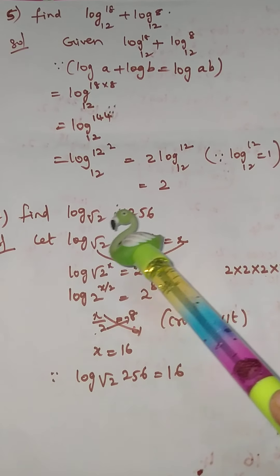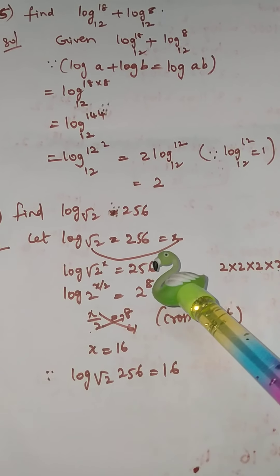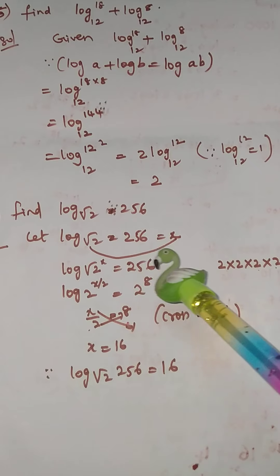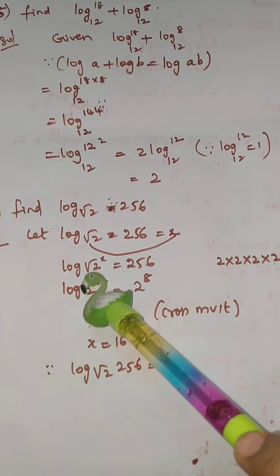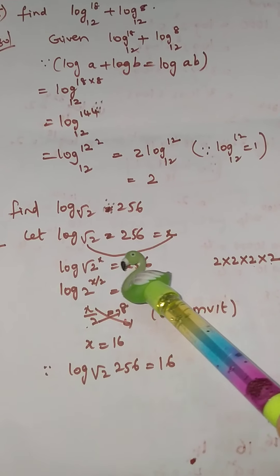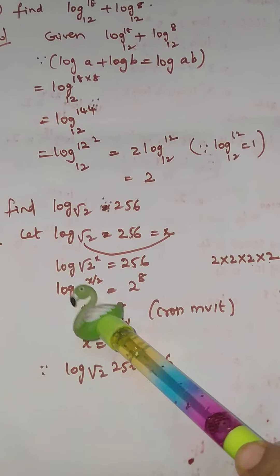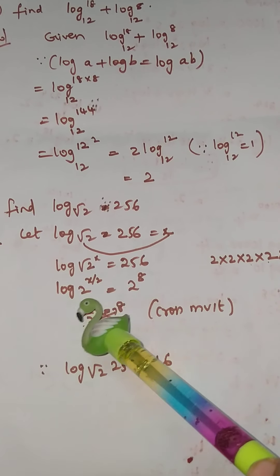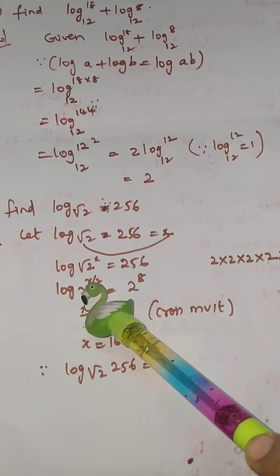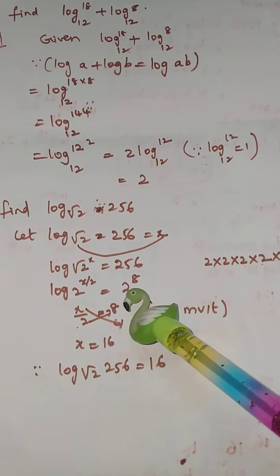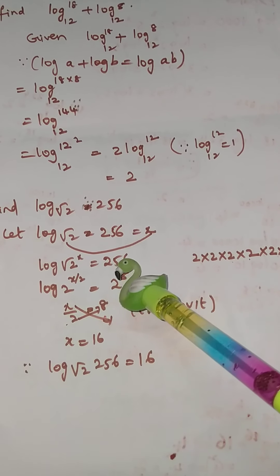Sixth problem: find log_{√2}(256). Let log_{√2}(256) = x. We take (√2)^x = 256. Writing √2 as 2^(1/2), we get 2^(x/2) = 256.